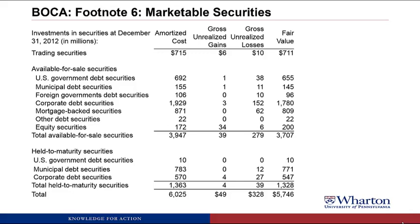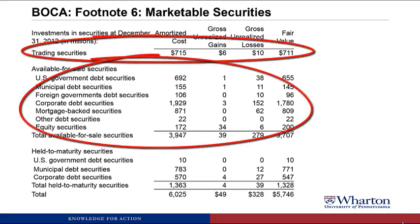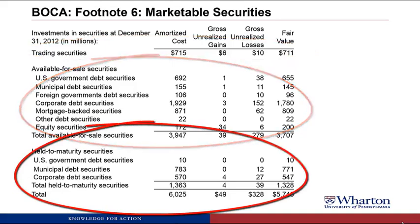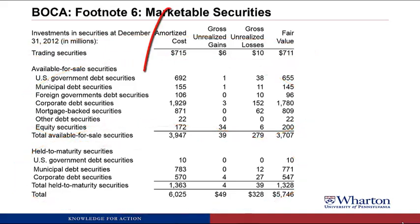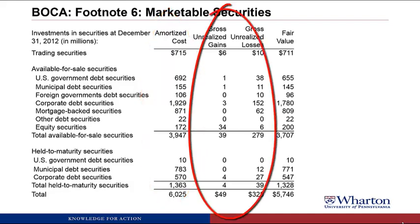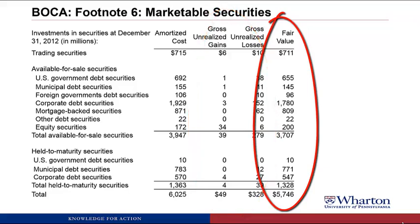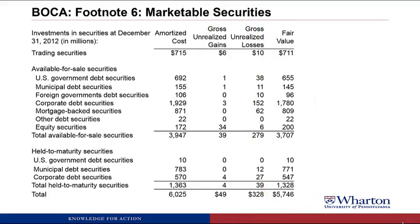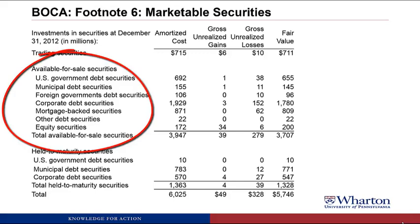Looking at the rows, we have trading securities, available for sale securities, and held to maturity securities. Looking at the columns, we have amortized cost, which is the original cost, any unrealized gains or losses since it was purchased, and then the current fair value as of December 31, 2012. For trading securities we get just the total; available for sale and held to maturity are broken out by type of security: U.S. government debt, municipal debt, foreign governments, corporate debt — that would be corporate bonds — mortgage-backed securities, other debt, and equity securities.